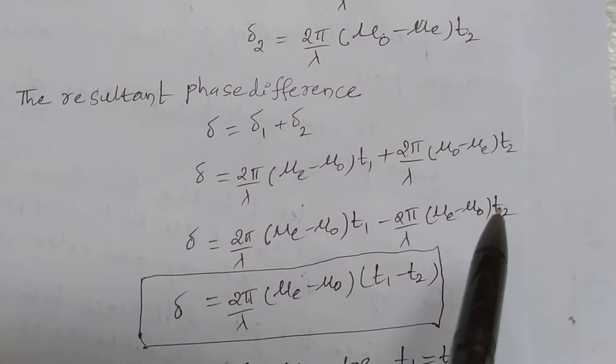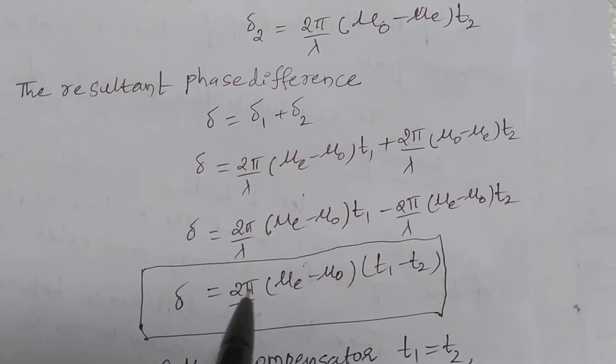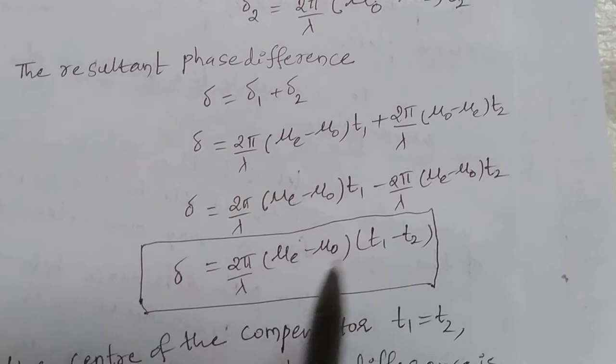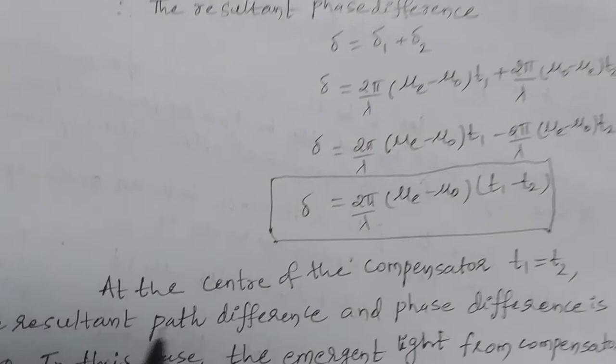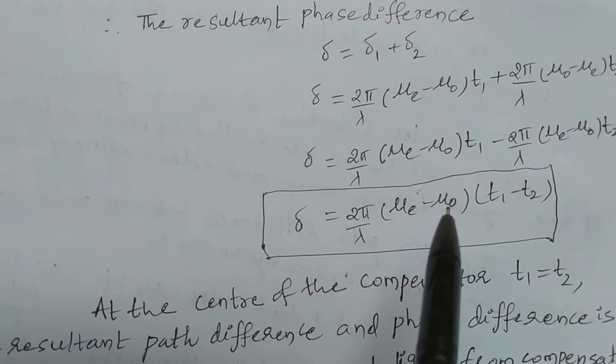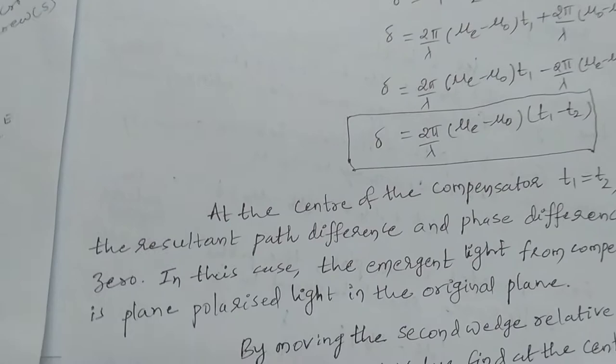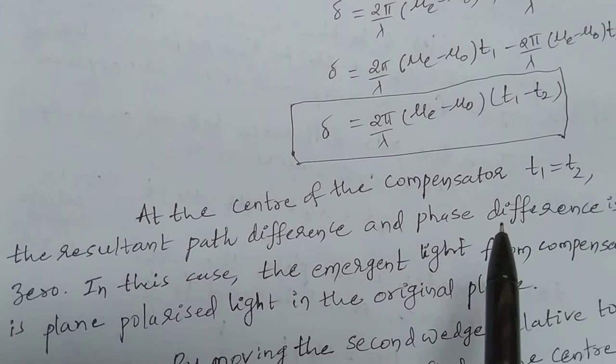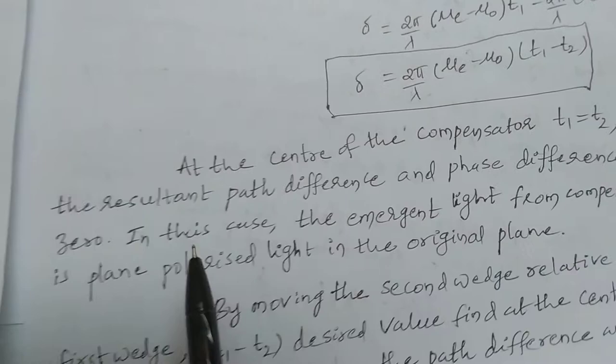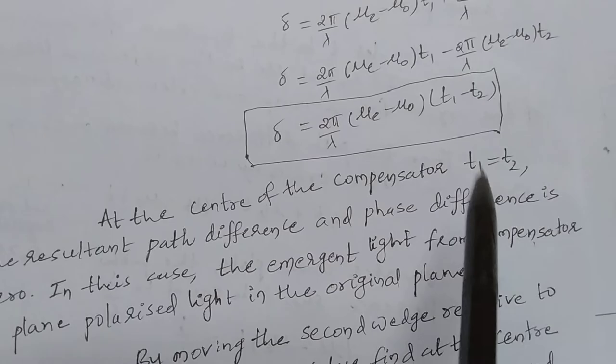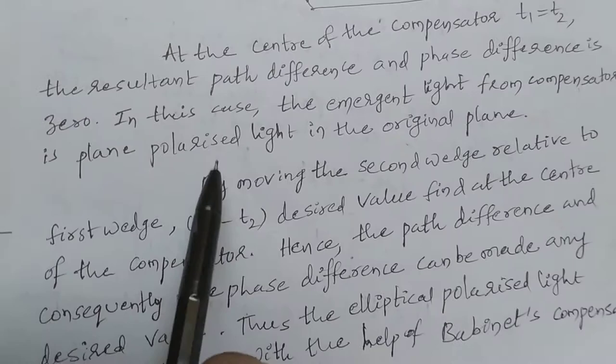So the resultant phase difference is δ = (2π/λ) × (μ_e − μ_o) × (t1 − t2). At the center of the compensator, t1 equals t2, meaning the thickness traveled in the first wedge equals the thickness traveled in the second wedge. Therefore, the resultant path difference and phase difference is zero, and the emergent light from the compensator is plane polarized light.